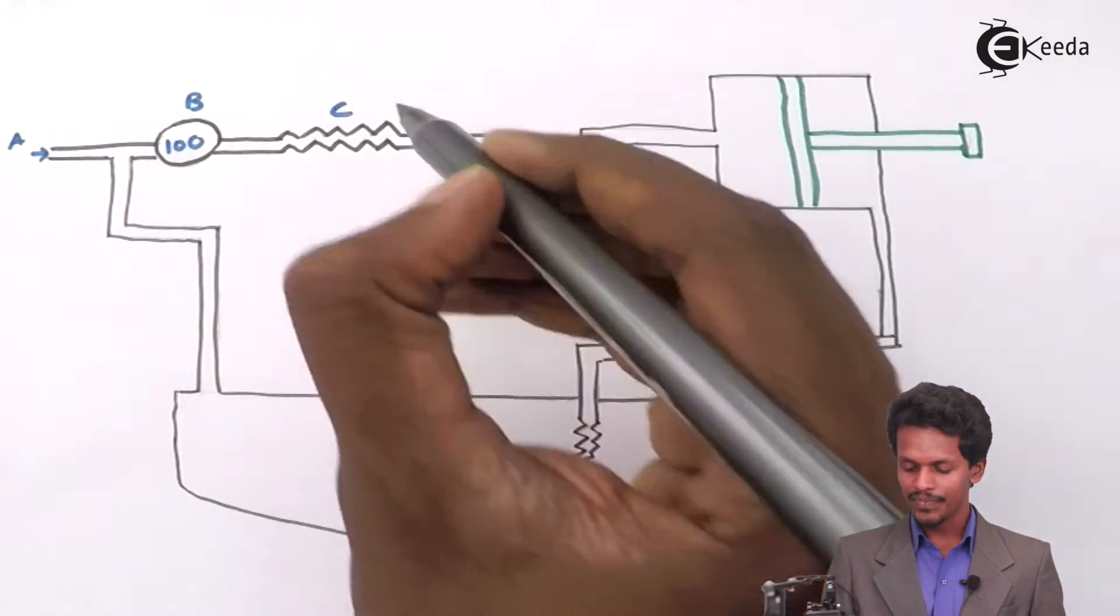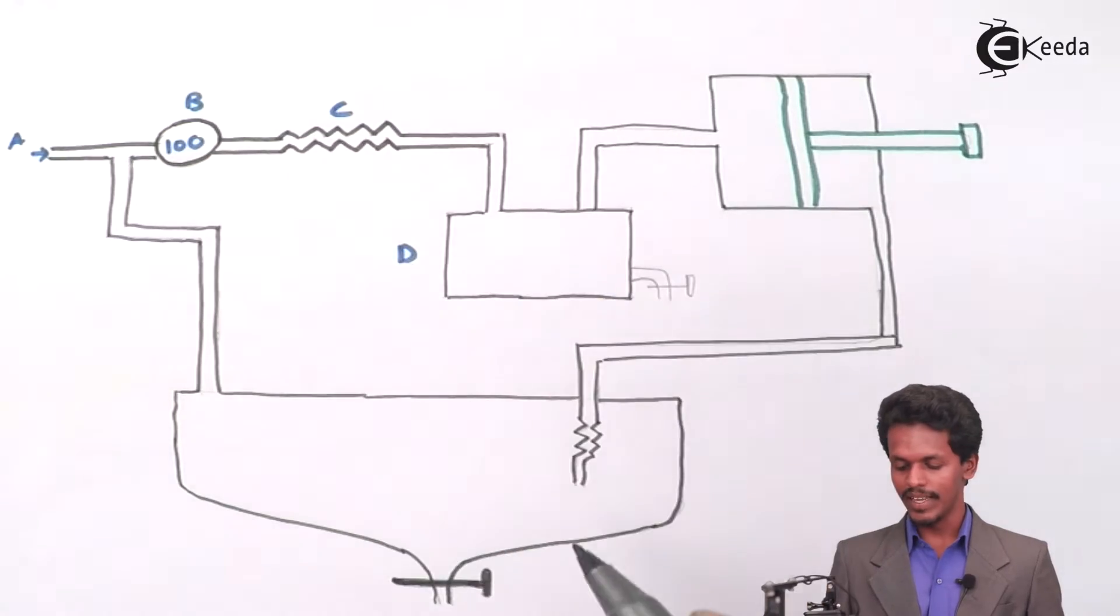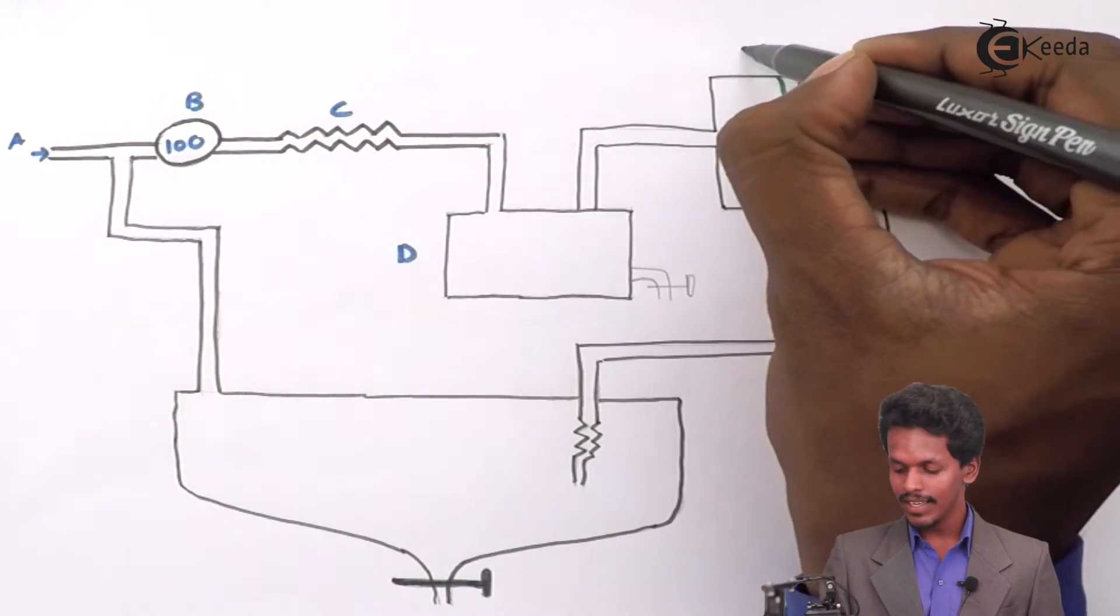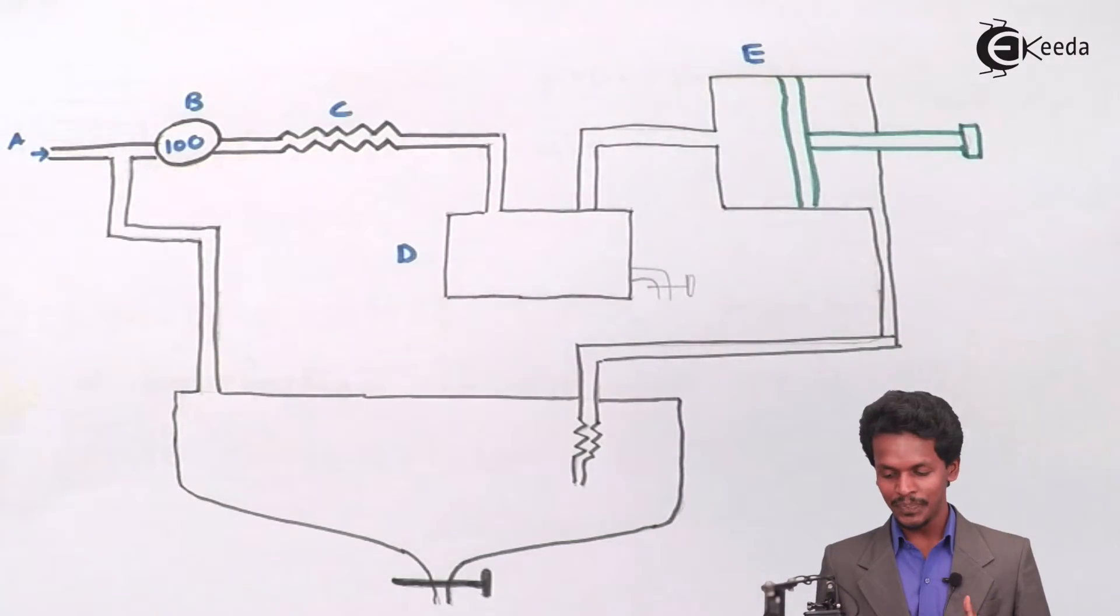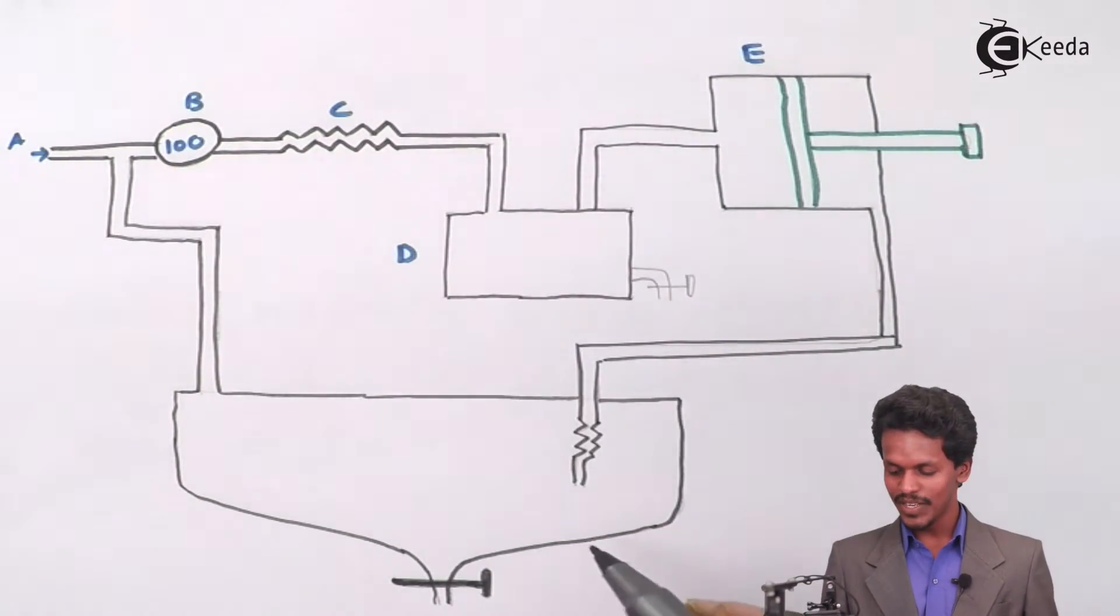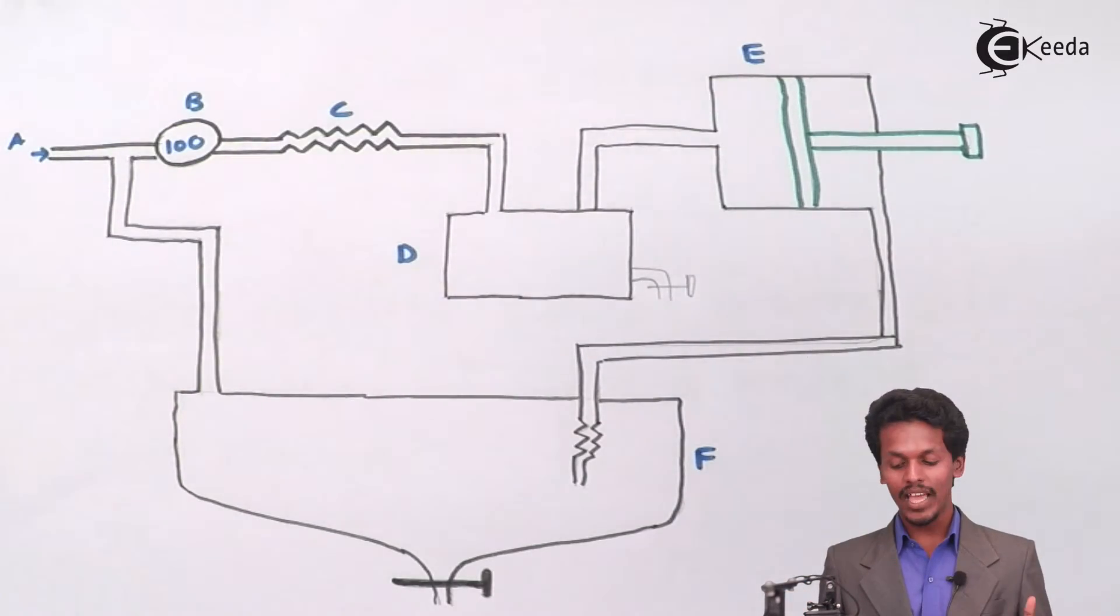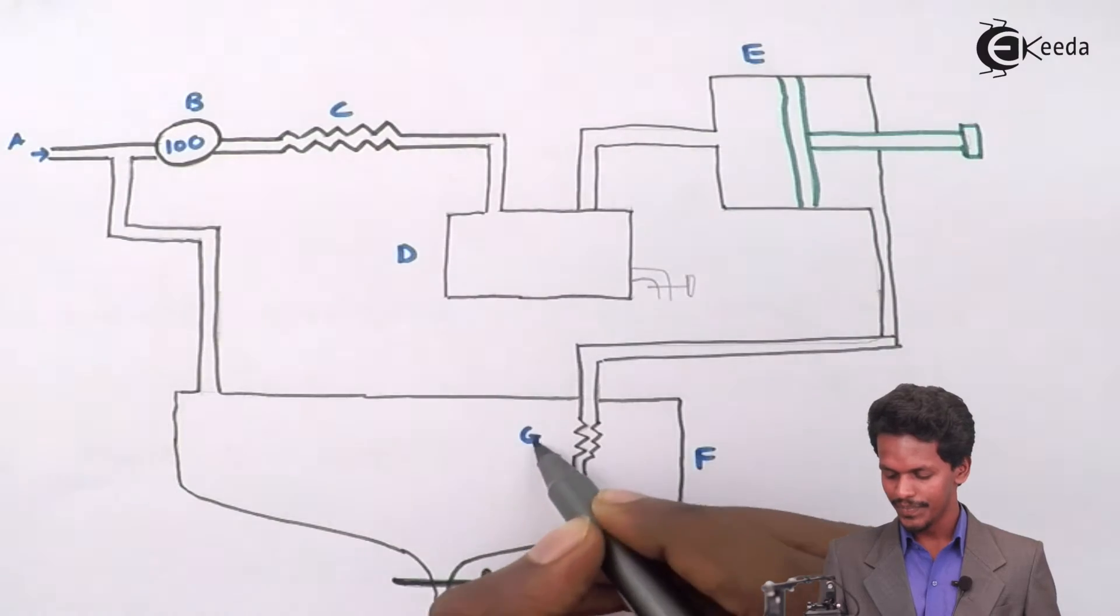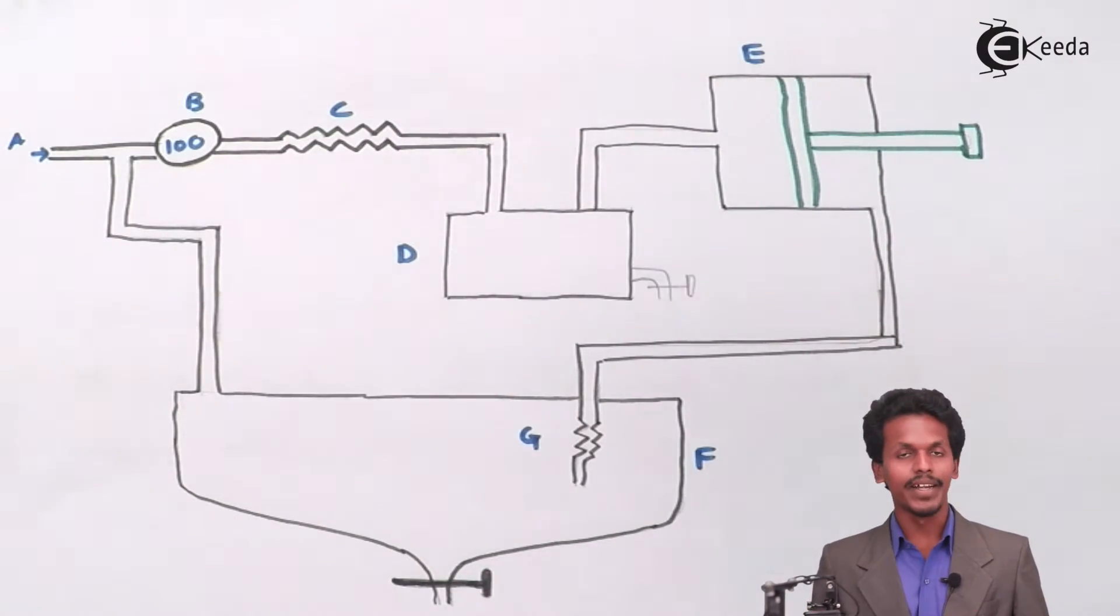This is the coil C. This is the container D where the water gets separated. And this is the container E where that air is allowed to do special work. And that has been passed through this flask that is F. And I would name this as G. So this is the overall setup that I have made.